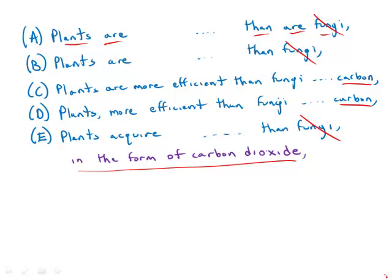That's not the meaning, and that problem is repeated in E. 'Plants acquire carbon more efficiently than fungi' - in other words, again, the plants are acquiring two things, carbon and fungi, and they're better at acquiring the carbon. That's not the meaning, so A, B, and E are all out.